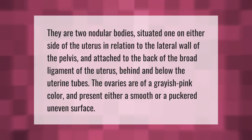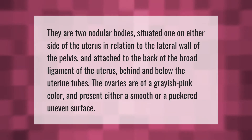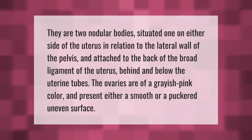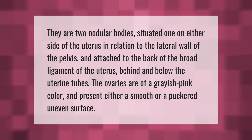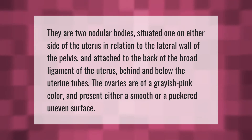The ovaries are two nodular bodies situated one on either side of the uterus, in relation to the lateral wall of the pelvis, and attached to the back of the broad ligament of the uterus, behind and below the uterine tubes. The ovaries are of a grayish-pink color and present either a smooth or a puckered, uneven surface.